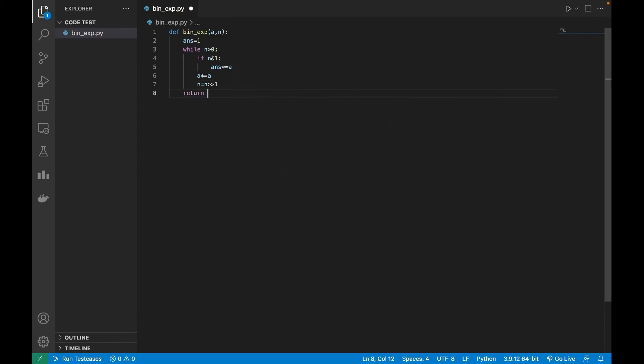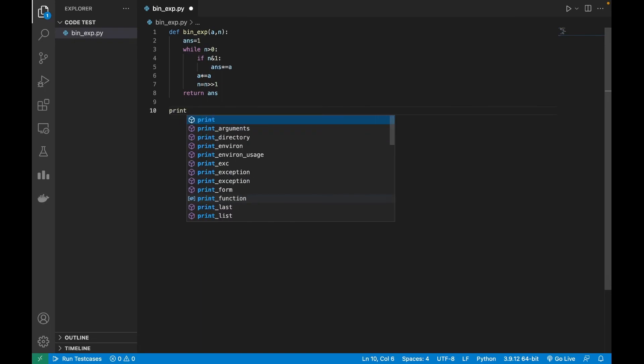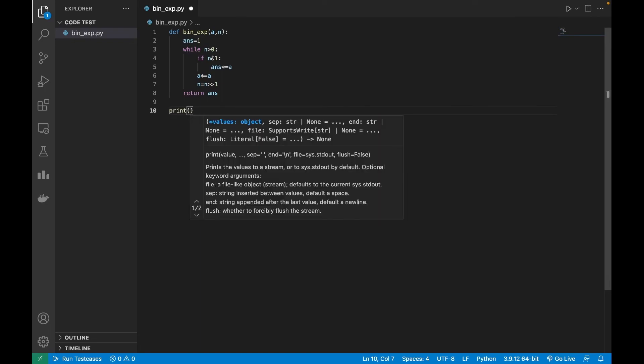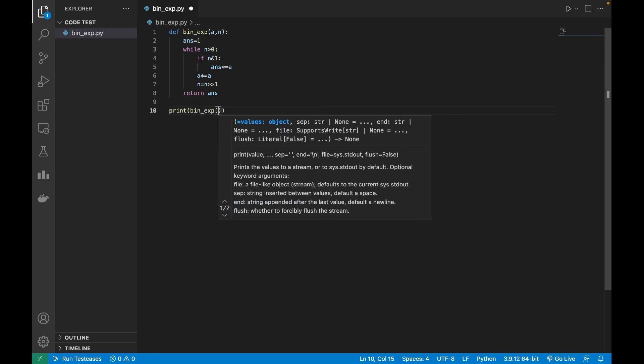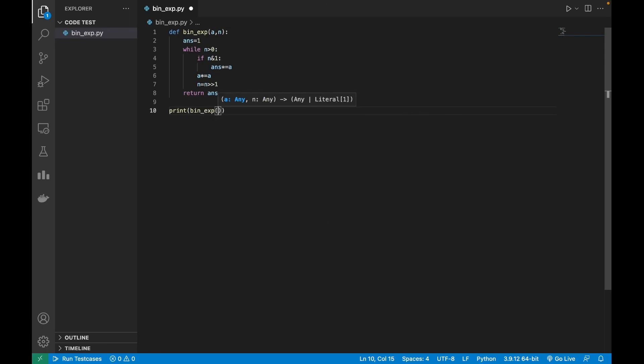And finally we will return our answer. Okay, so for checking purpose I will write here print bin_exp. I will check, let's first do something simple like 10 raised to power 2.